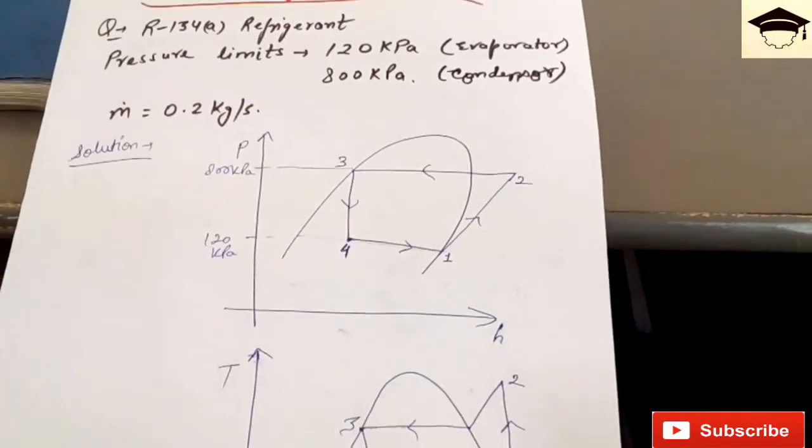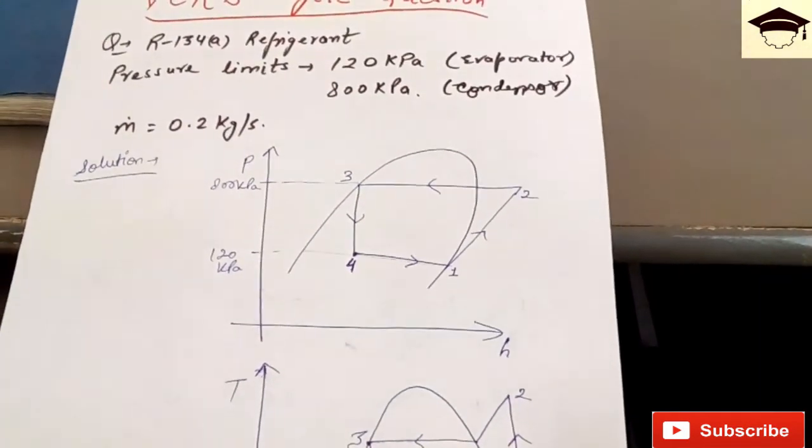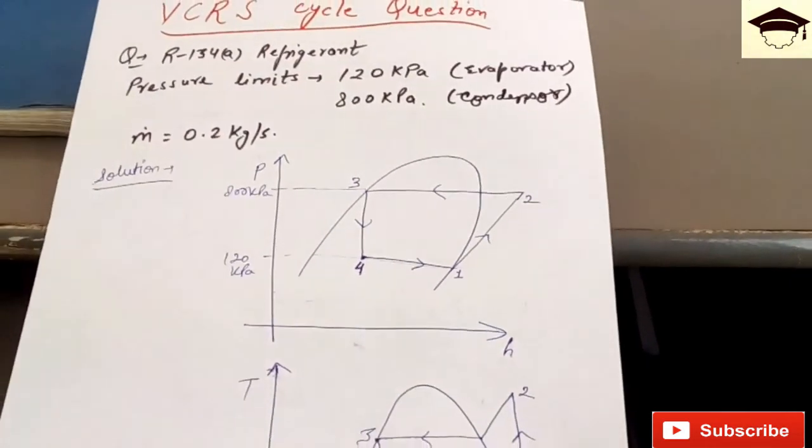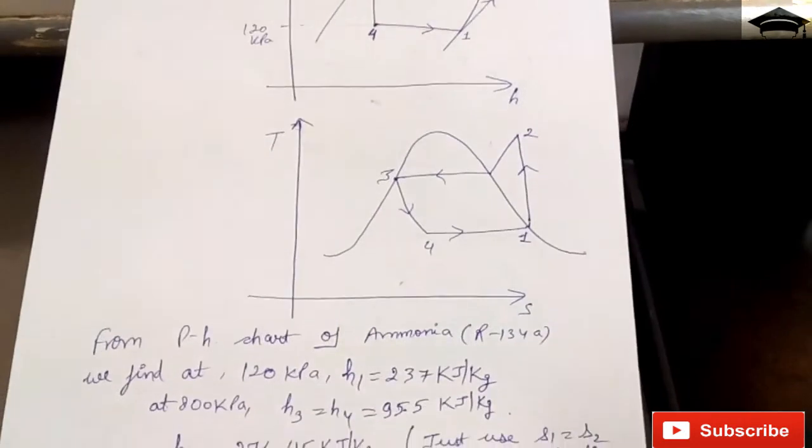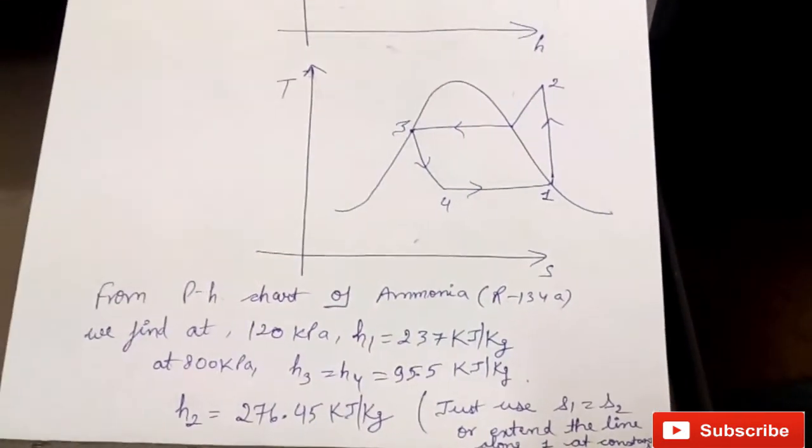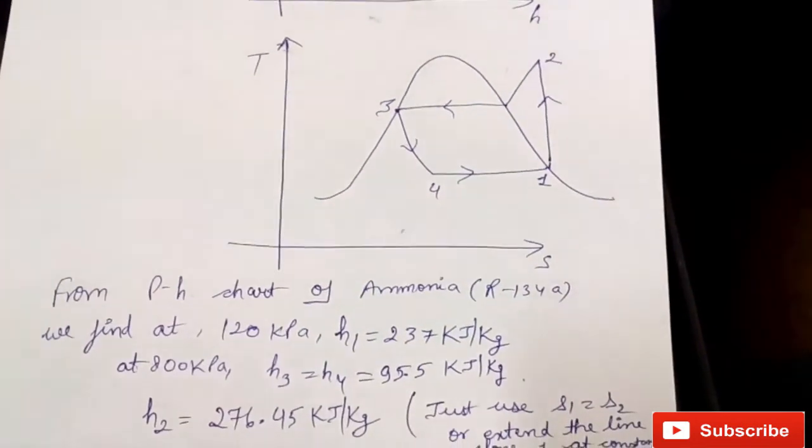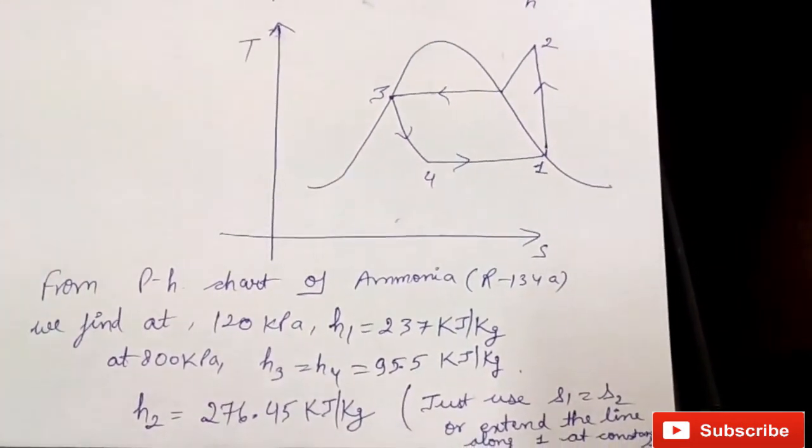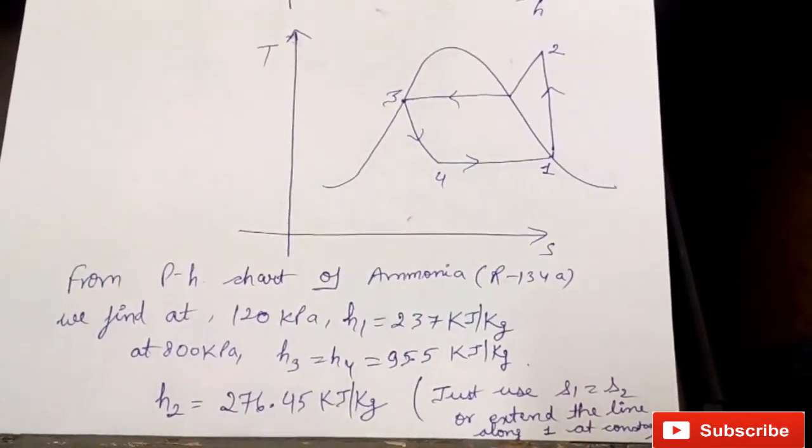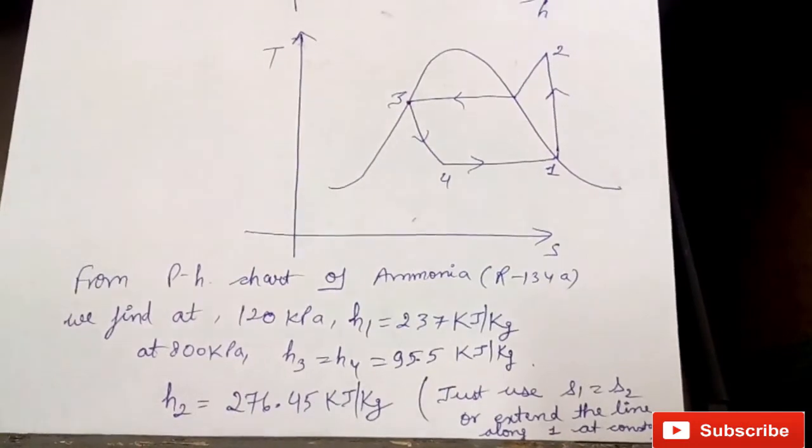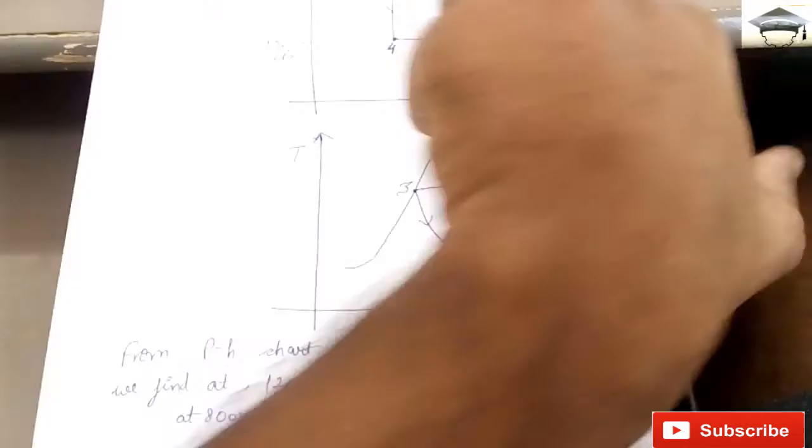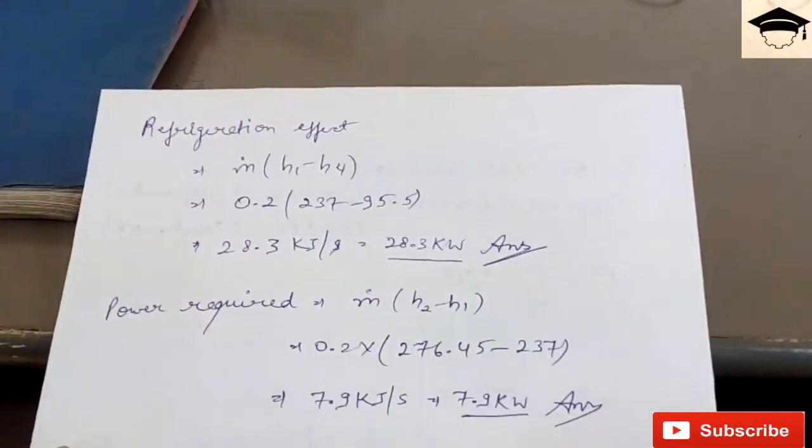Now we have to find refrigeration effect, the power required, and the COP. These three are mainly required for solving any question. Refrigeration effect is given by h1 minus h4, but since mass flow rate is given, you multiply by mass flow rate. So it will be m into (h1 minus h4). You substitute the values and calculate: you get 28.3 kilojoules per second. Kilojoules per second is kilowatts, so the answer will be 28.3 kilowatts.